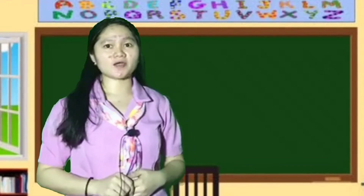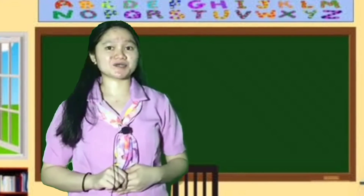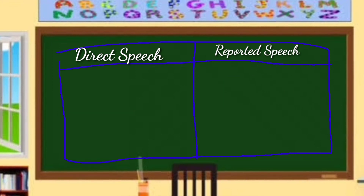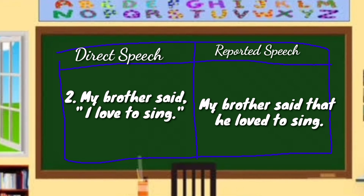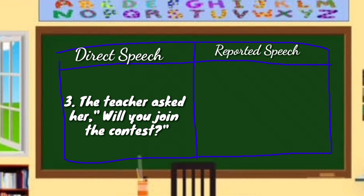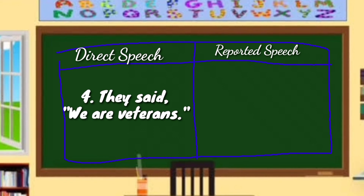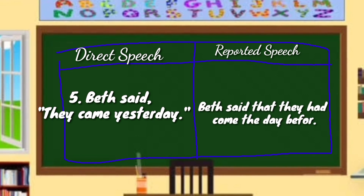Let's level up. Change the direct speech to reported speech — number 1 is done for you. Number 1: Nicole said, 'Tell me the truth.' Answer: Nicole demanded to tell her the truth. Number 2: My brother said, 'I love to sing.' Answer: My brother said that he loved to sing. Number 3: The teacher asked her, 'Will you join the contest?' Answer: The teacher asked her if she would join the contest. Number 4: They said, 'We are veterans.' Answer: They said that they were veterans. Number 5: Beth said they came yesterday. Answer: Beth said they had come the day before.